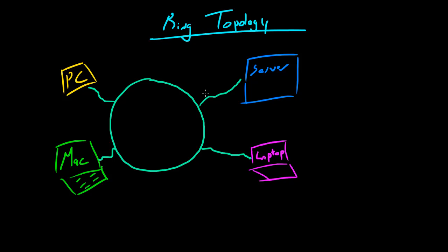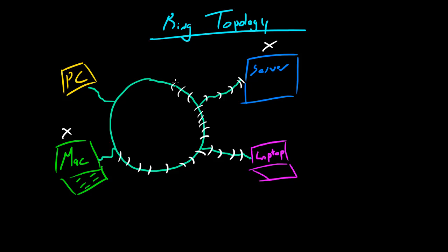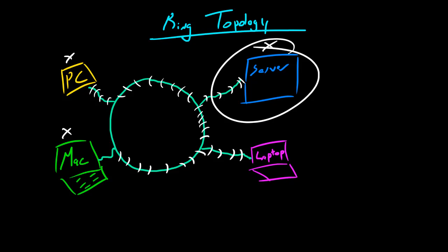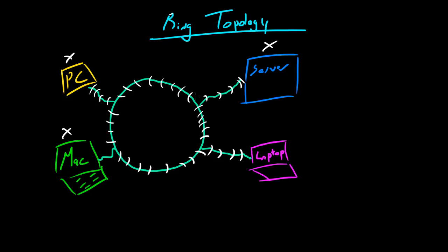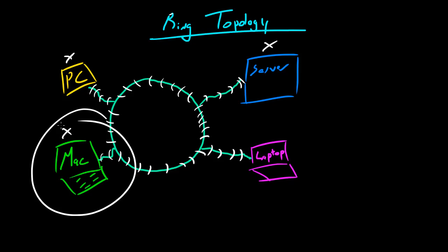Looking at how data is logically transmitted: say this Mac wants to access the server. It would send out a request — data travels around the ring in one direction, hitting each node at a time. It would first ask the laptop, 'do you have the file I'm looking for?' and the laptop says no. Then it reaches the server, which says yes. But because this is an electrical signal it keeps going, even asking the PC, even though it already got the information from the server. It hits node by node, and even if it reached its destination it continues until it returns to the source node.